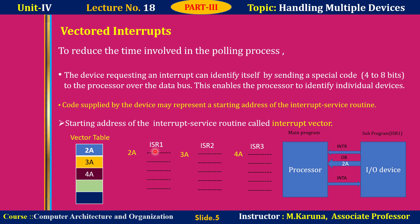IO device 1 has its own code ISR 1, IO device 2 has ISR 2, and the third IO device has its own routine ISR 3. Each ISR has its own starting address: ISR 1 starts at location 2A, ISR 2 at 3A, and ISR 3 at 4A. These ISRs are stored in memory locations — the memory location 2A stored first, then 3A in the next location. This memory structure is called the vector table. The vector table contains the starting addresses of the ISRs.